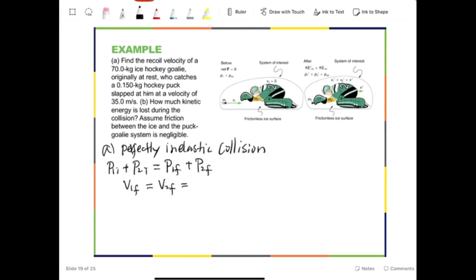Let's plug numbers. We know that initially the hockey goalie is 70, and he was initially at rest, no speed. But the hockey puck was moving at 35.0 m per second. And finally, they both are moving together. So we can put the mass of the goalie and the puck together and times the final velocity.